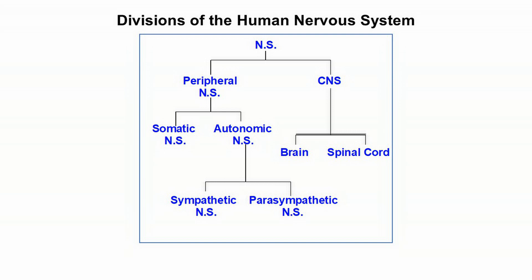You'll also read in your textbook about the endocrine system, and you can think of that as a typically — not always — slower means of communication, as hormones flow through your bloodstream and allow one part of your body to send a message to another part. I'm not going to give you specific, detailed quiz questions about the endocrine system; however, I do want you to be familiar with it, so make sure you read your textbook.